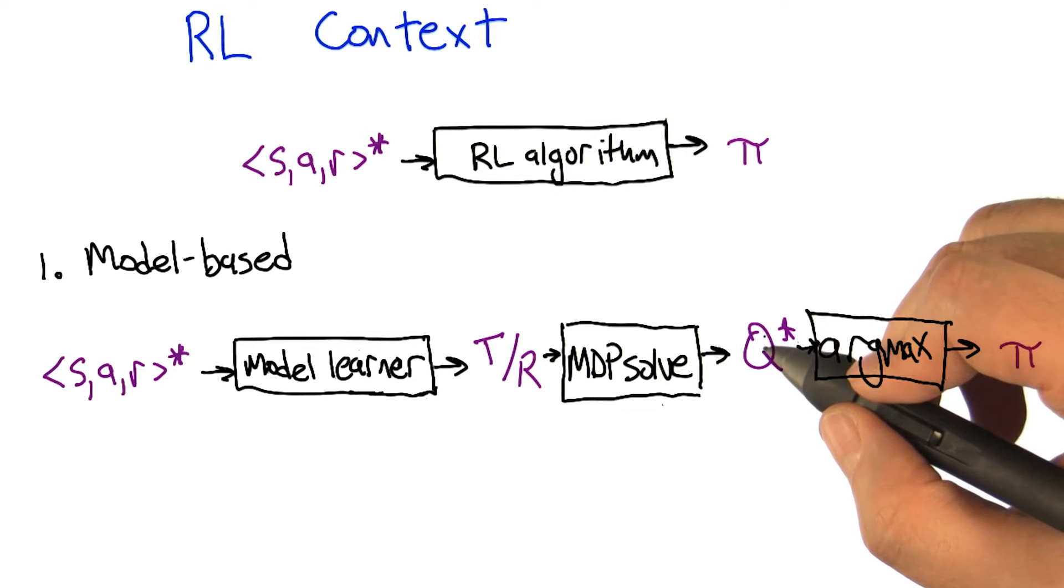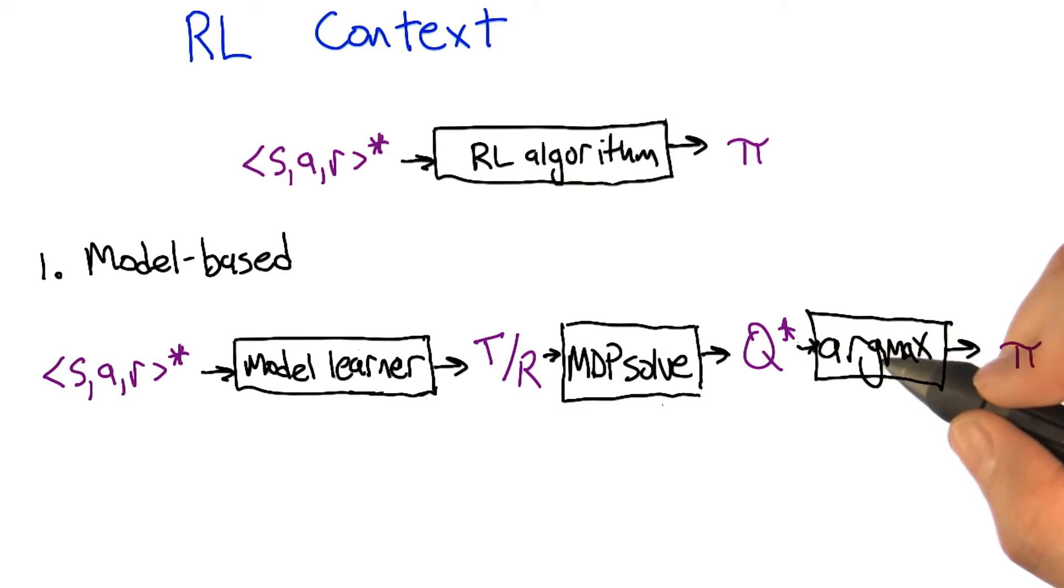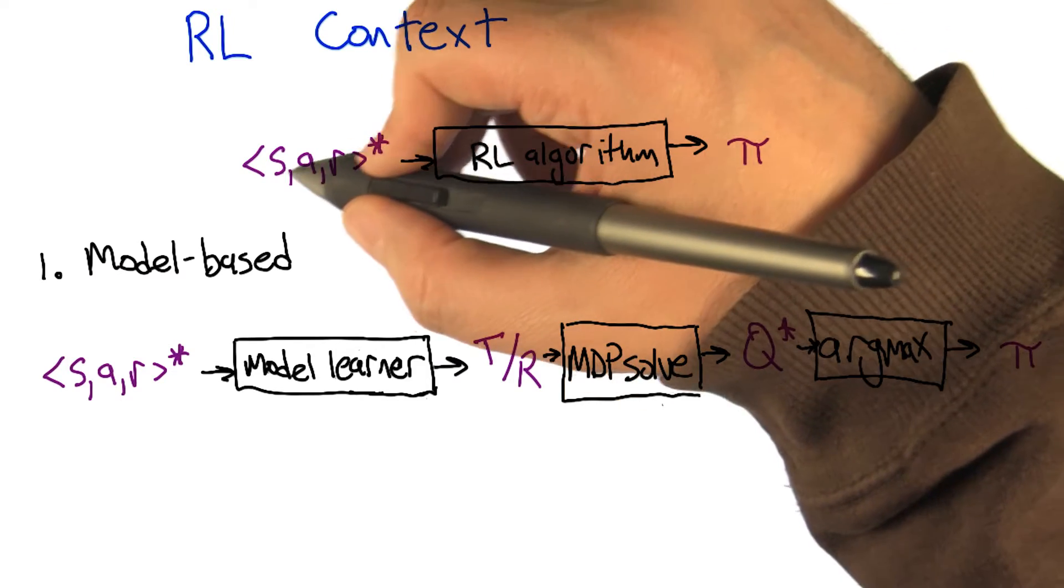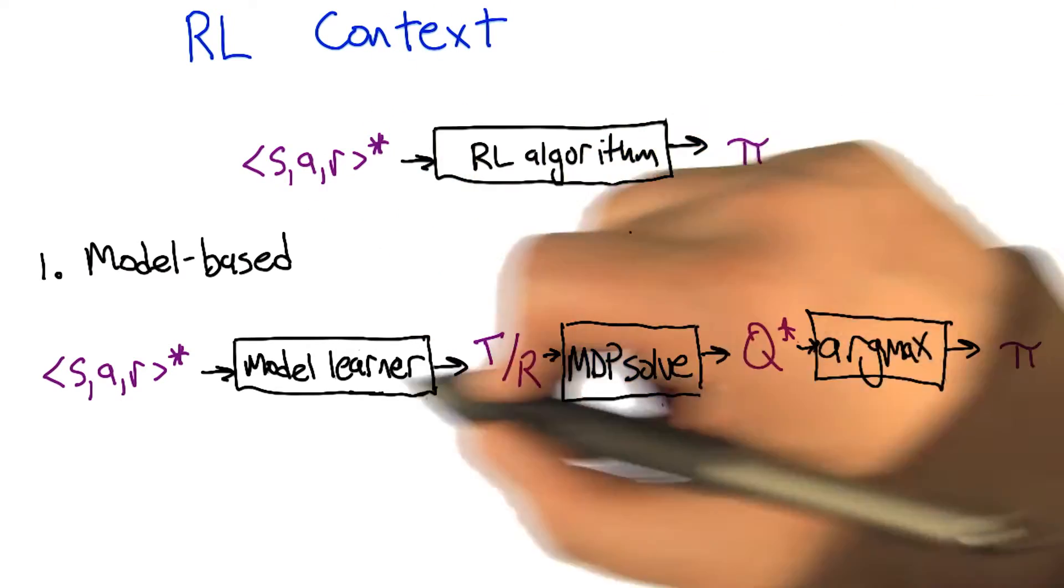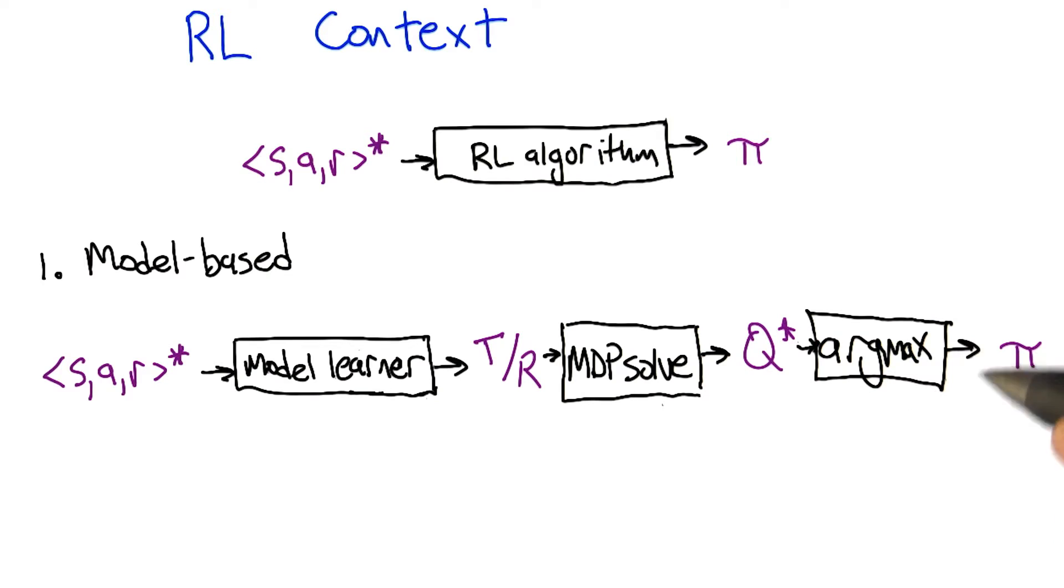which could be used to spit out a Q star, an optimal value function. And once you have the optimal value function, just by taking the argmax of the state that you're in, you can choose which action you should take in any given state, and that gives you the policy. So it's still mapping the state action reward sequence to policies, but it's doing it by creating all these intermediate values in between.